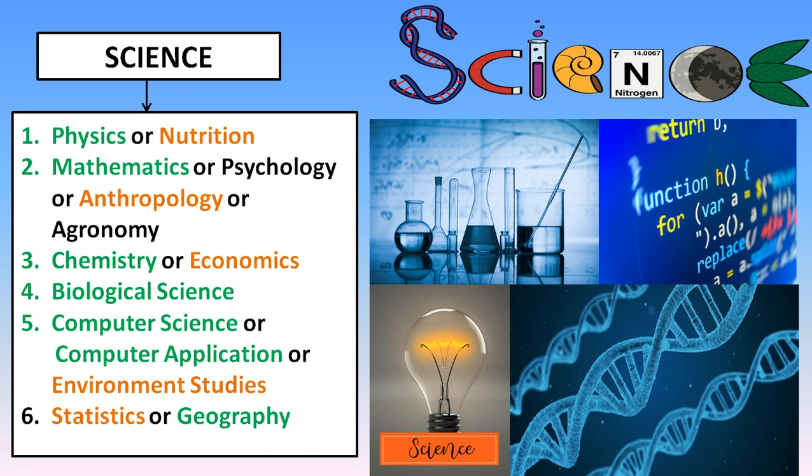If you intend to learn Computer Science, certain things you need to learn include coding and programming. The way it is taught in school will give you a foundation so that you will be able to learn more in Computer Science.